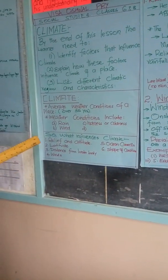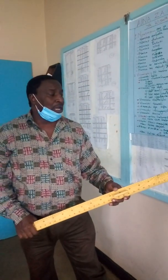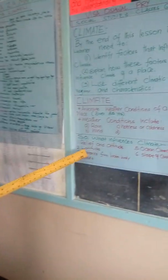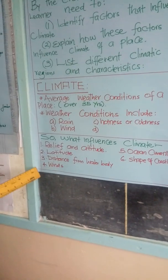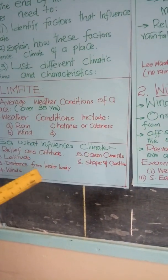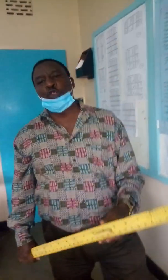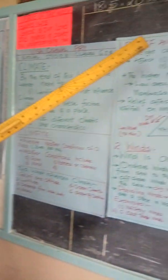Number one is relief and altitude. Then latitude. Then the distance from a water body. Then winds. Then ocean currents. And the shape of the coastline. All these six factors we are going to consider one at a time, and I will start with relief and altitude.